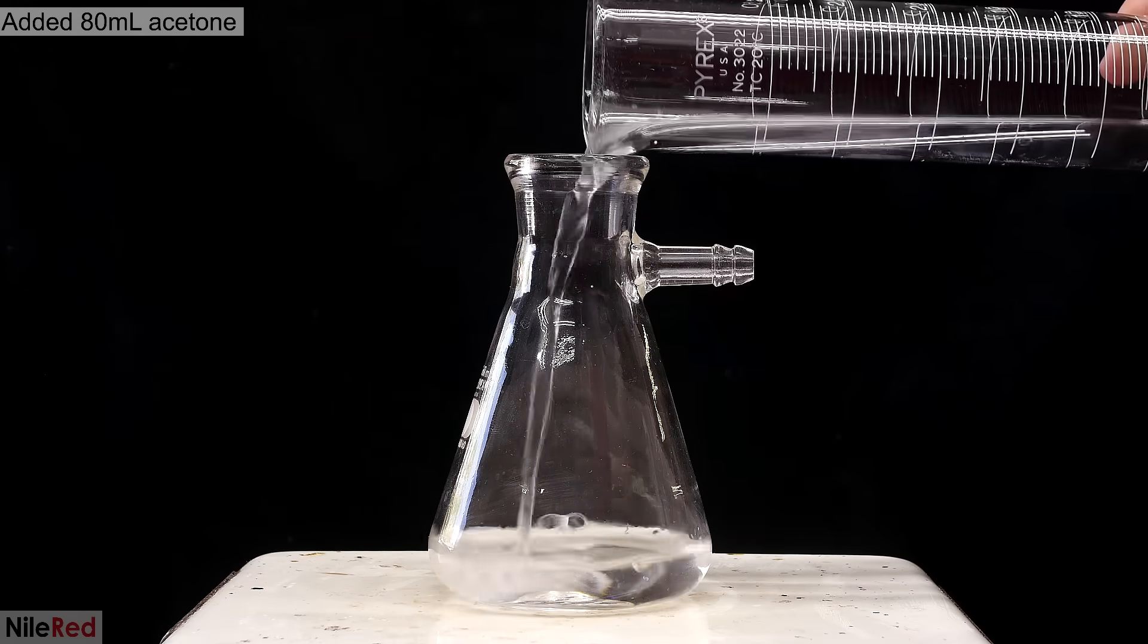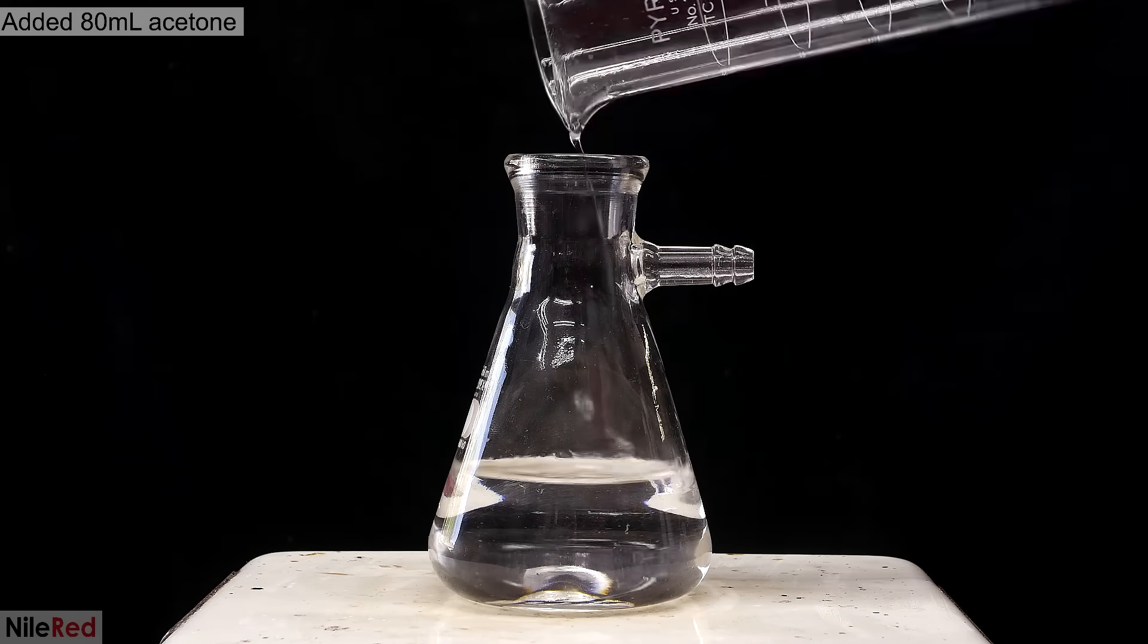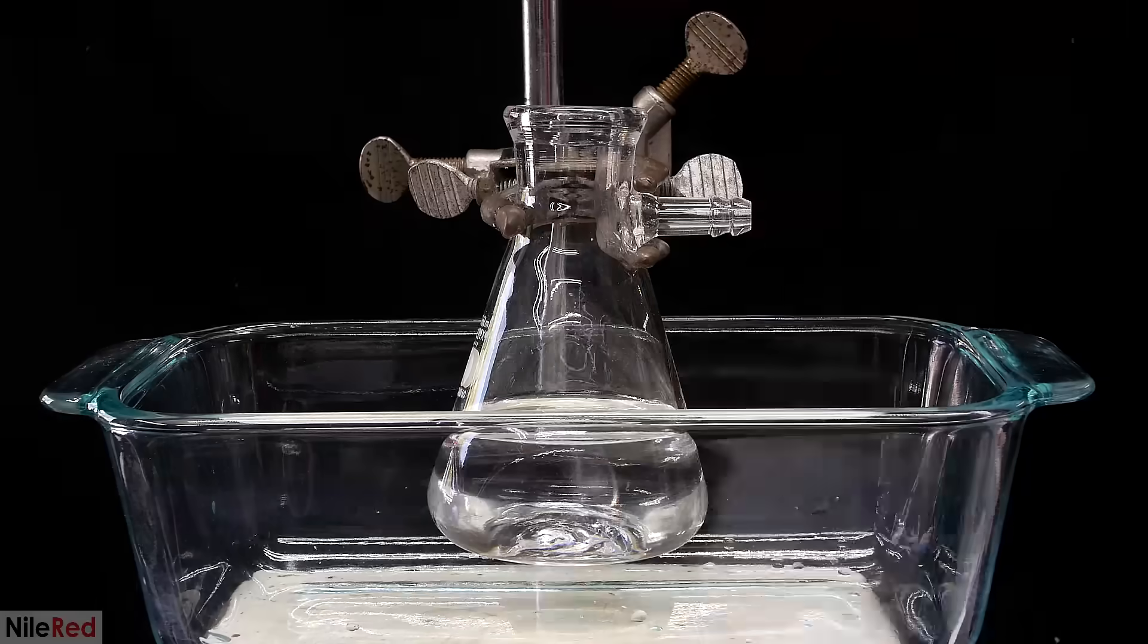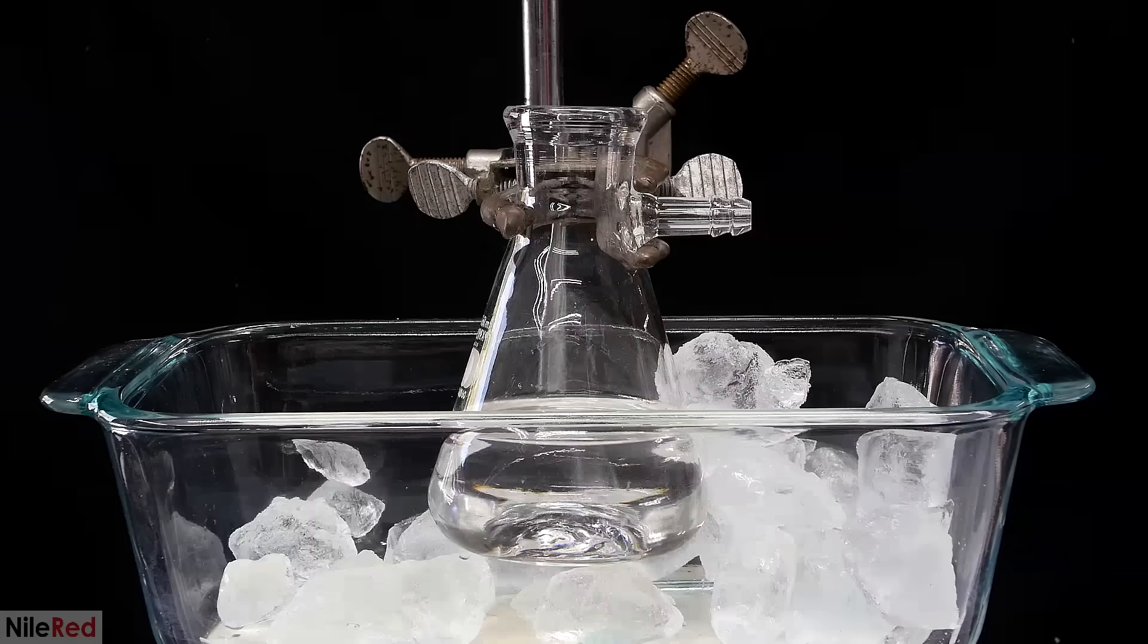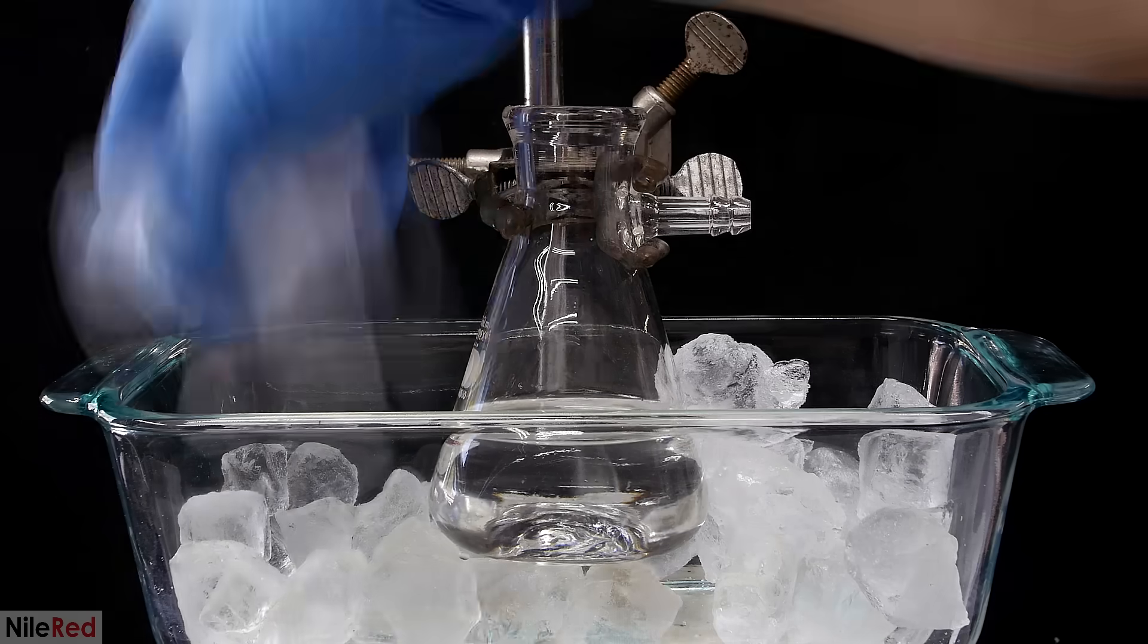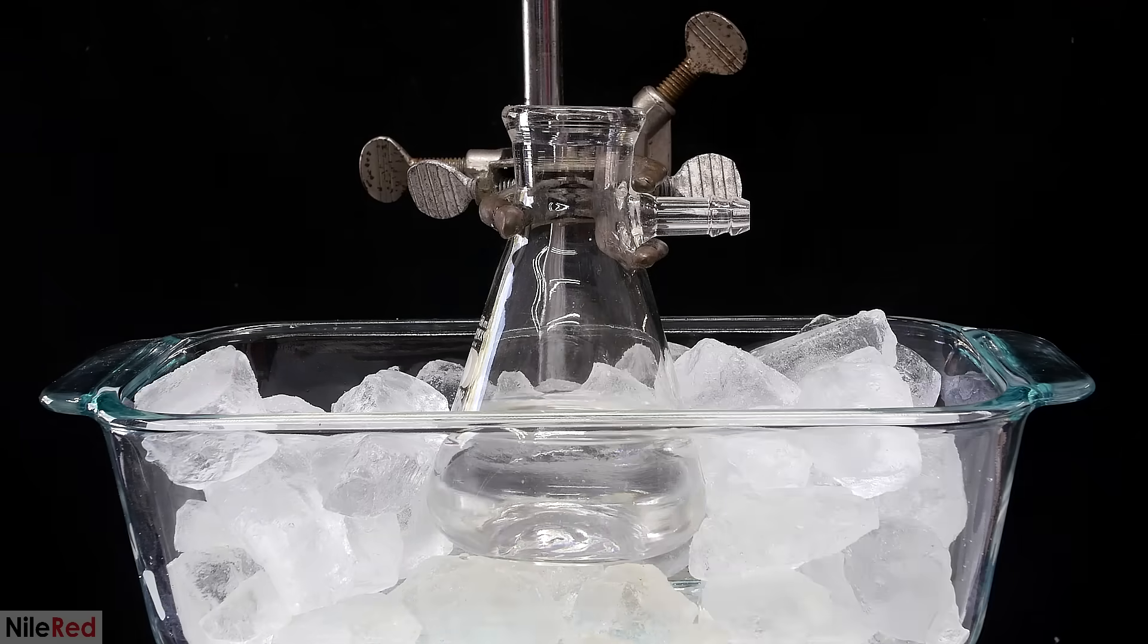I start things off by adding 80 milliliters of acetone to a suitable flask. The acetone needs to be cooled to between 0 and 5 degrees Celsius, and to do this, I set up an ice bath.